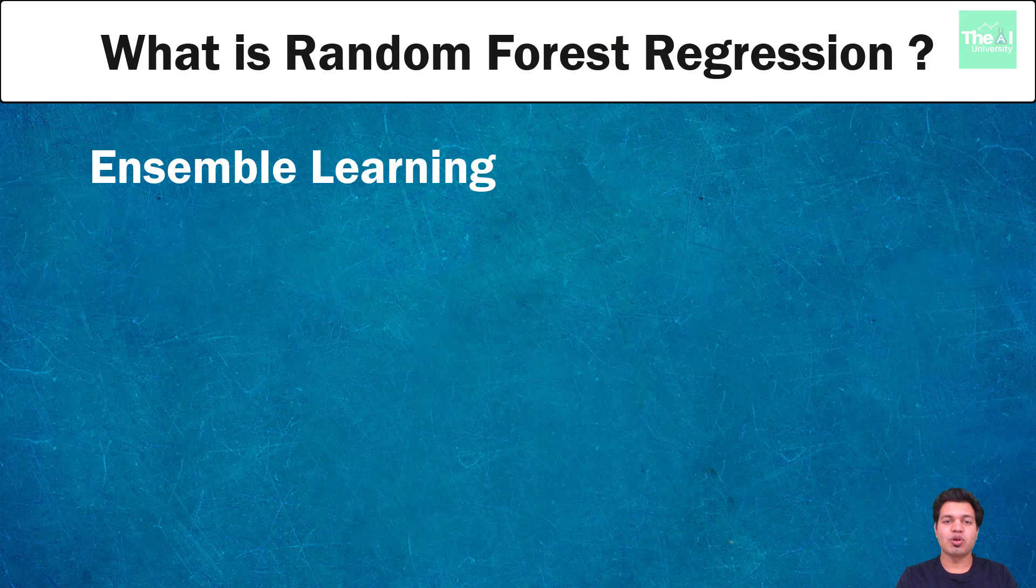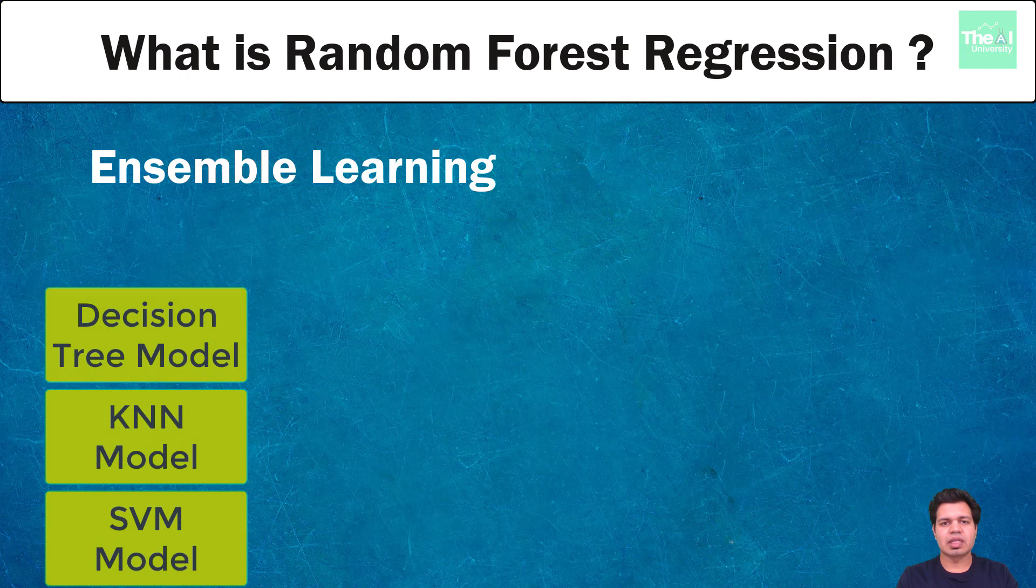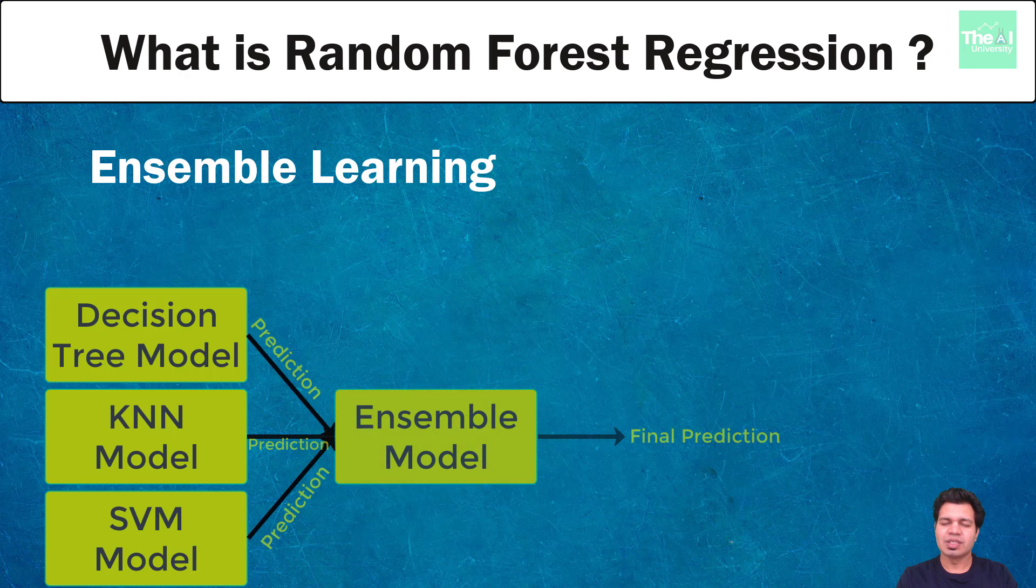Predictions from a single individual model might not give that much accurate results, and hence we use ensemble learning techniques for that purpose. A model which is composed of several machine learning models is called an ensemble learning model. So we can develop several models like decision tree, KNN, support vector machines on the same data to get combined predictions from them.